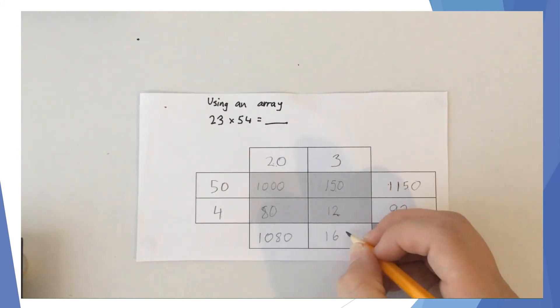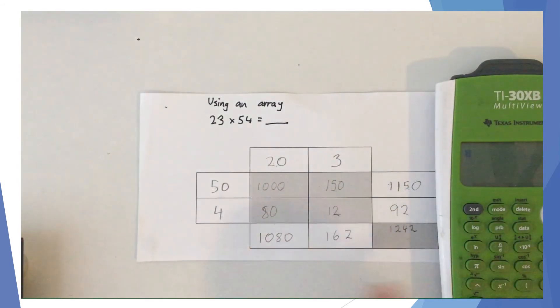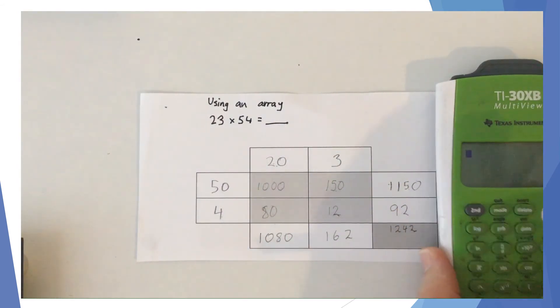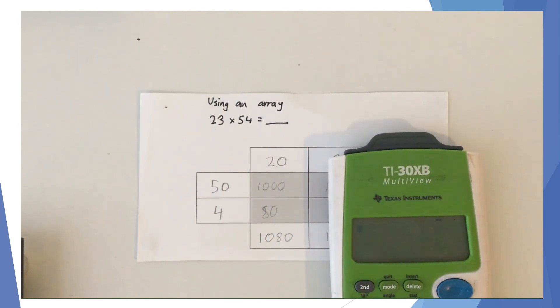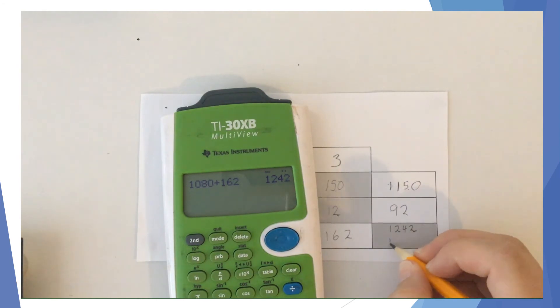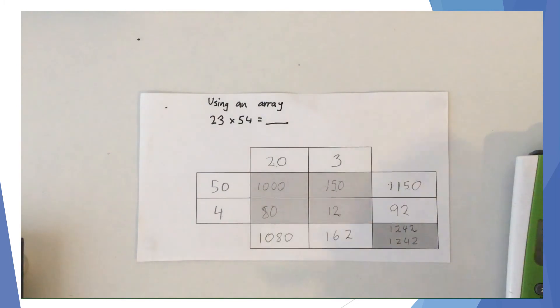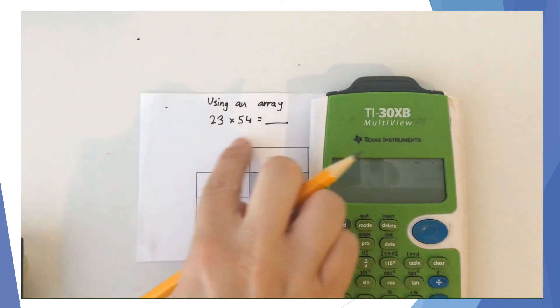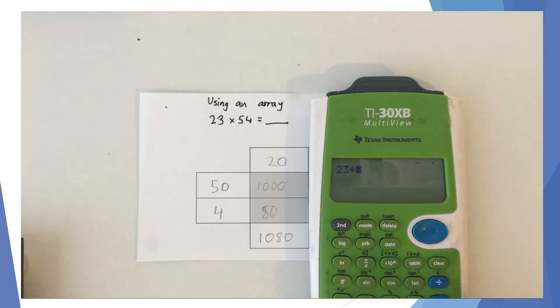Now if I'm correct, when I add these up and these up and then add those two, the answer should be 1,242. So let's check that. 1,000 plus 80 is 1,080. 150 plus 12 is 162. Then I'm going to use my calculator - 1,080 plus 162 gives me 1,242. So our answers are the same, which is good. We can actually check that by going back up here as well. 23 times 54 equals 1,242, so our answer is correct.